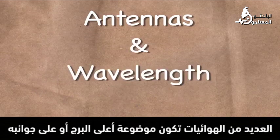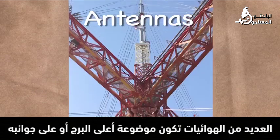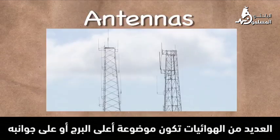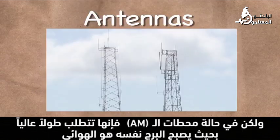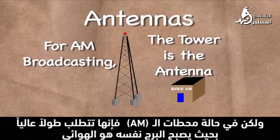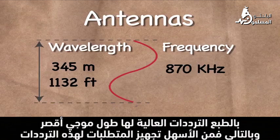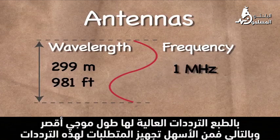Many antennas are placed on top of or on the side of a tower. But for AM stations, the required height is so great that the tower becomes the antenna. Of course, higher frequencies have smaller wavelengths, and it becomes easier to make components for these frequencies.